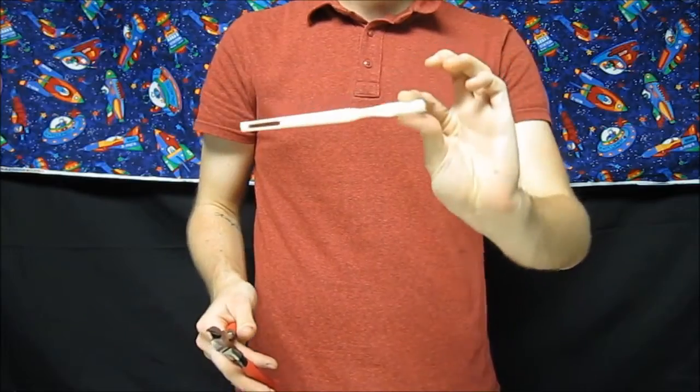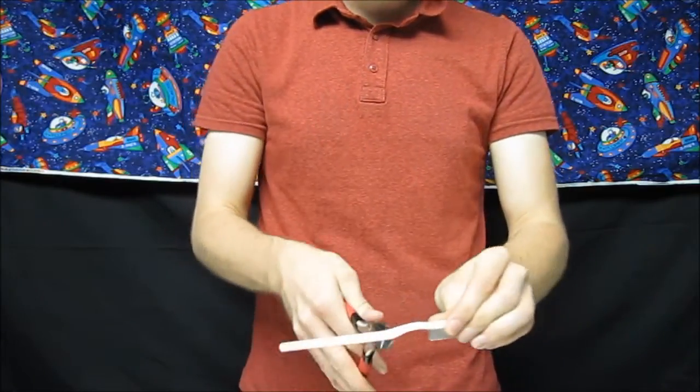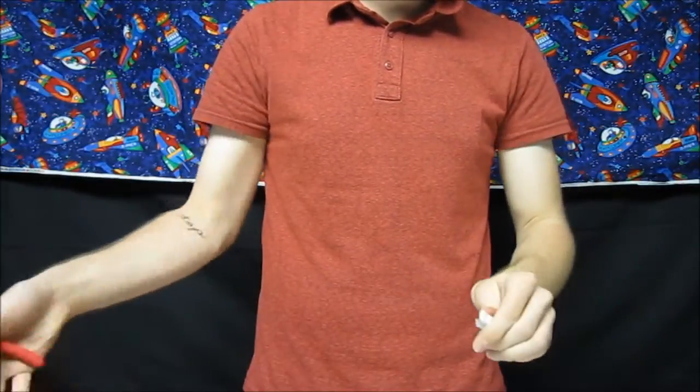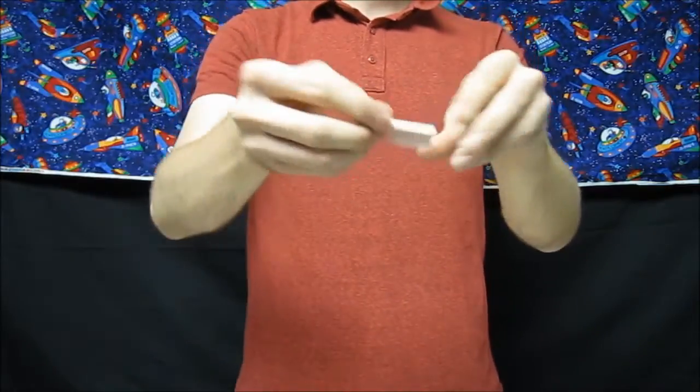So today, as I promised, I am going to make one for you. First, you're going to take a toothbrush and a pair of wire cutters and cut the back end off the toothbrush, so you just have a toothbrush head.